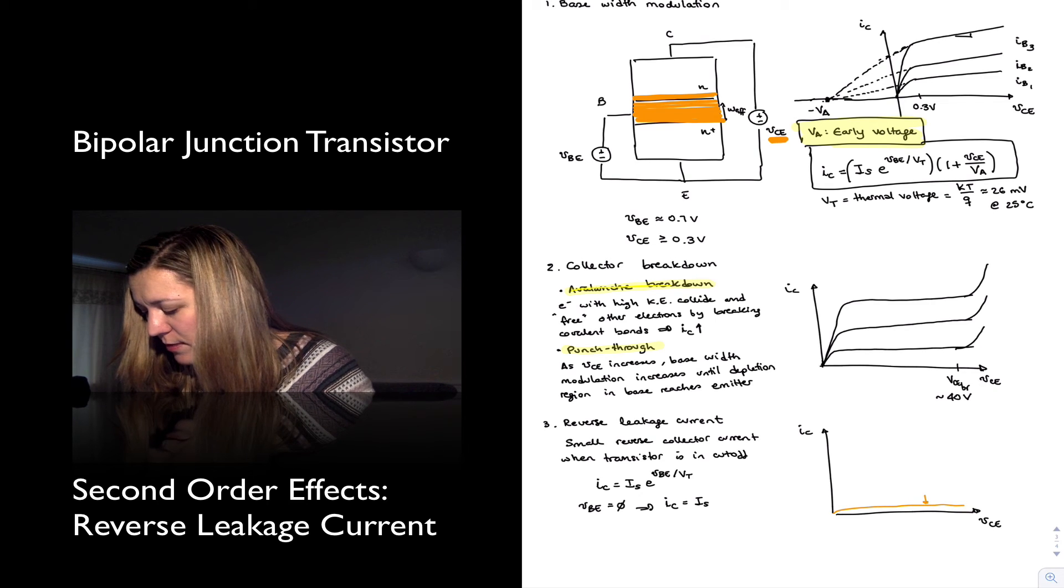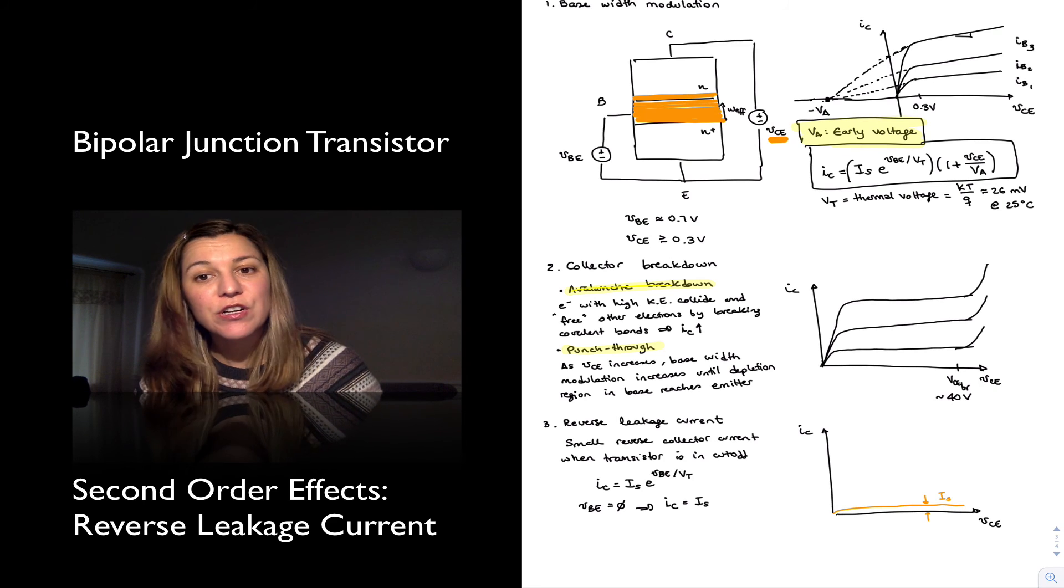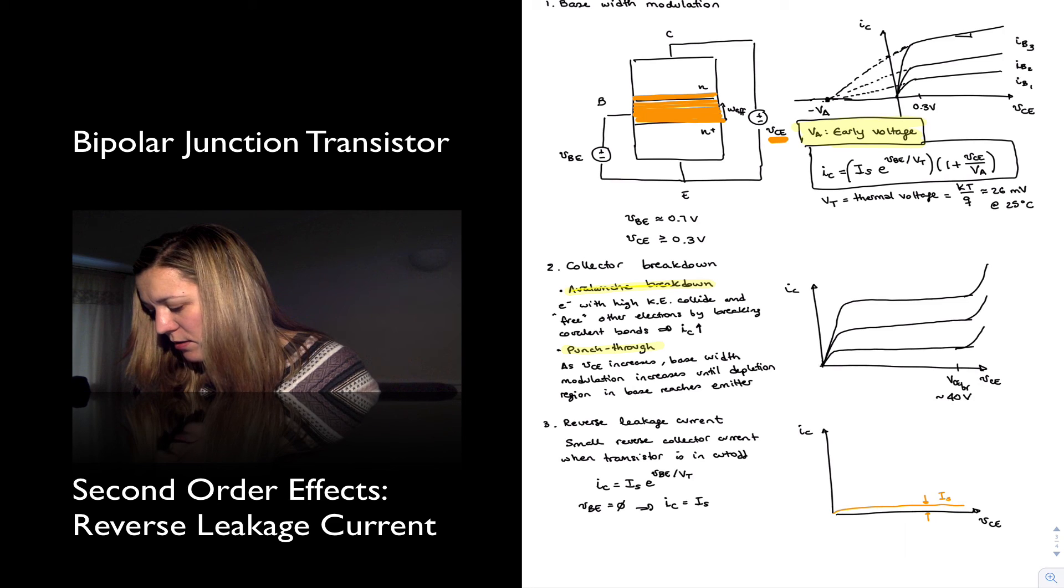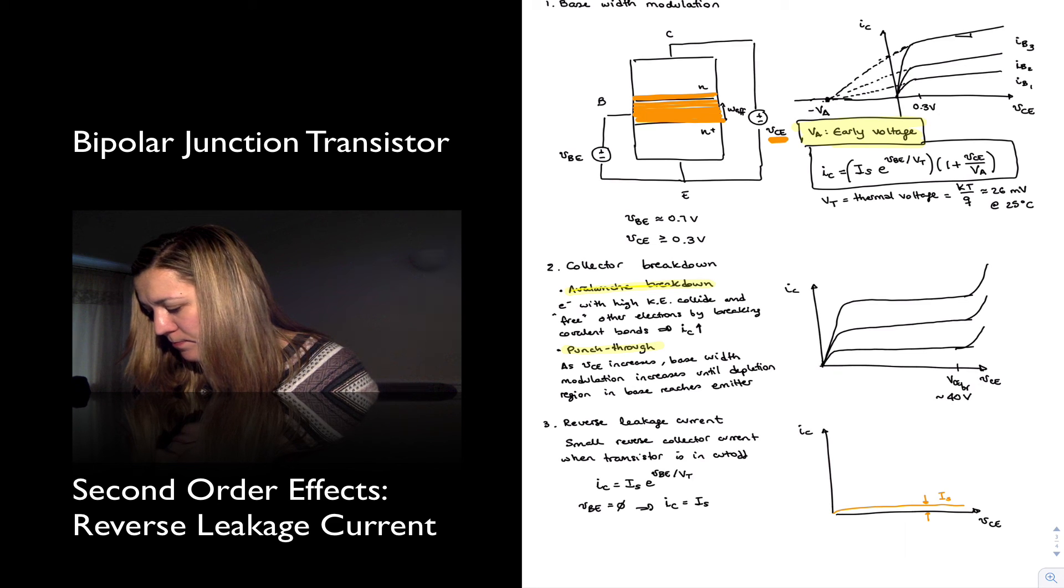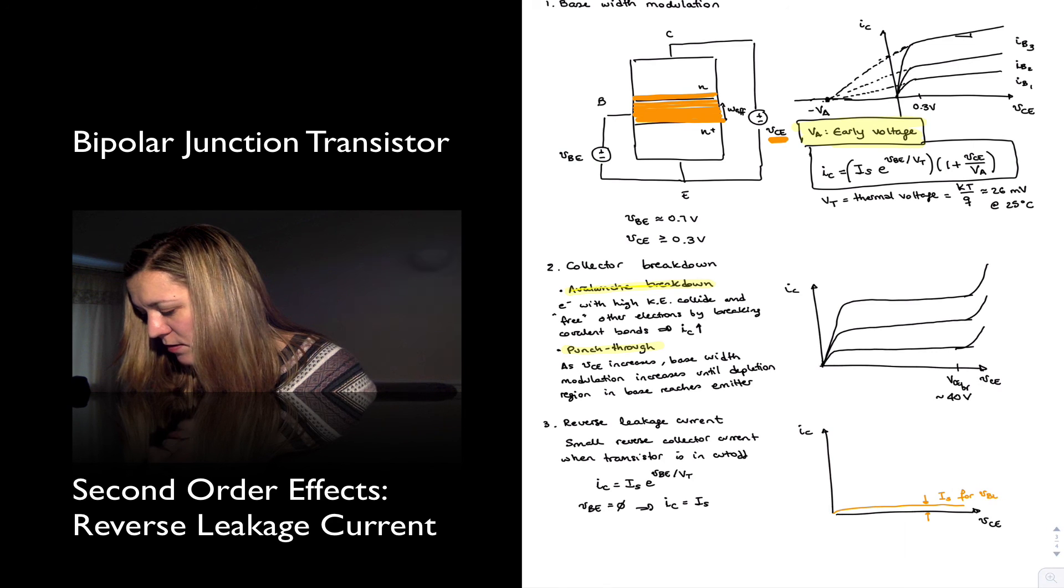some current, which is what we call IS, or the collector current, and for VBE equal to zero, consistent in cutoff.